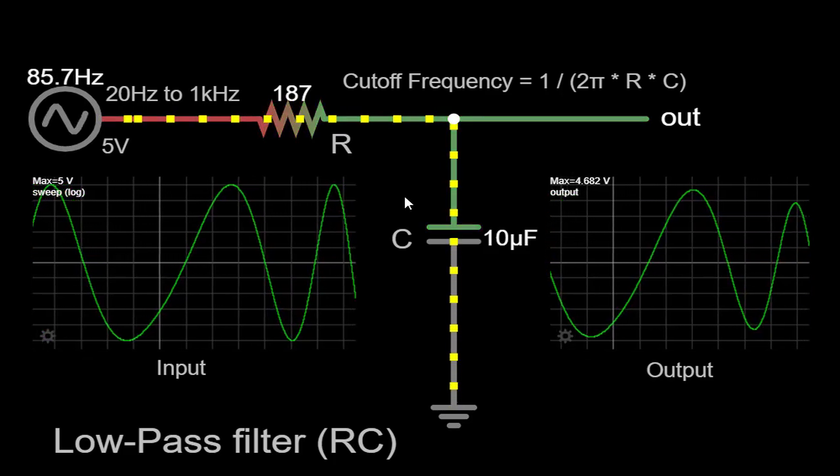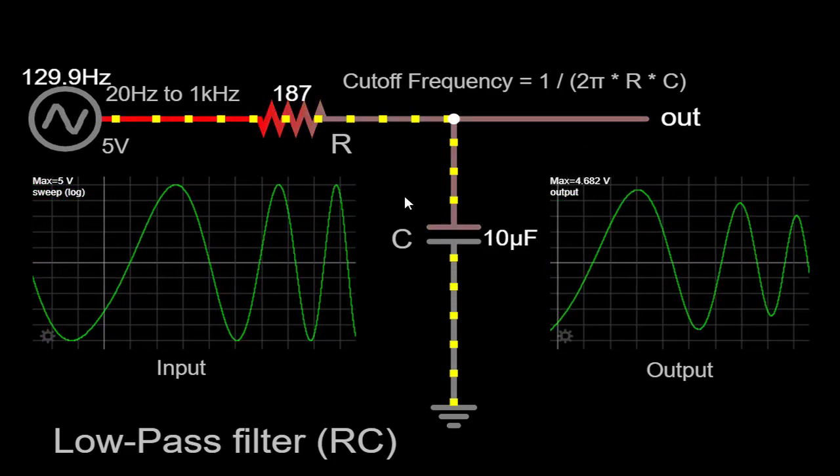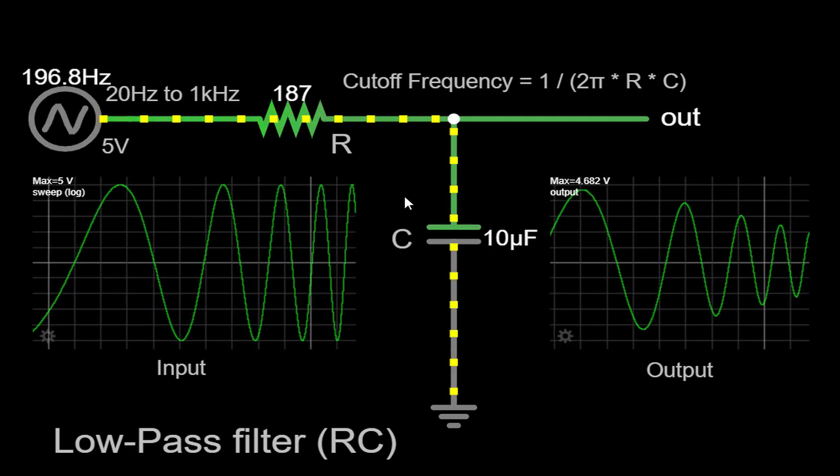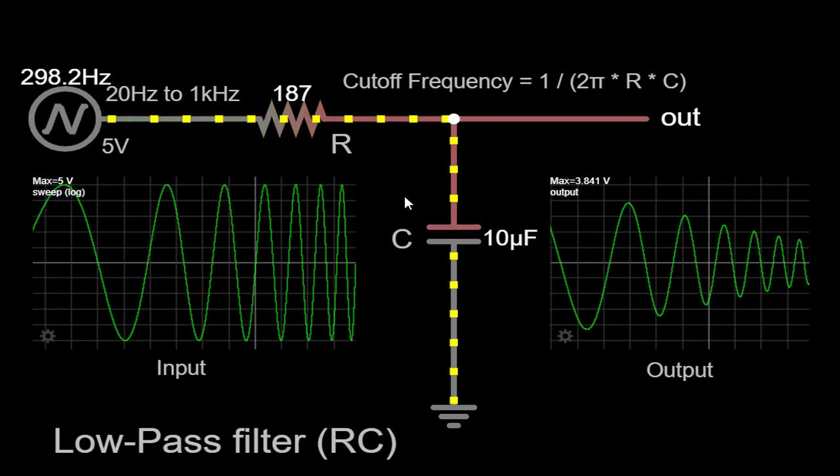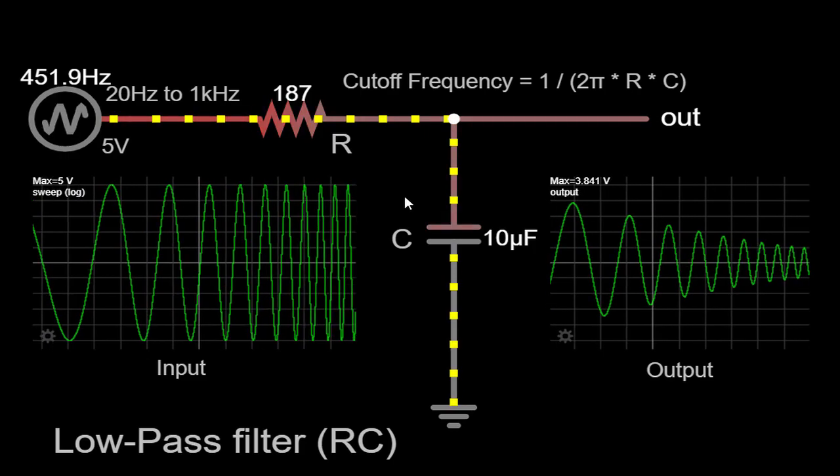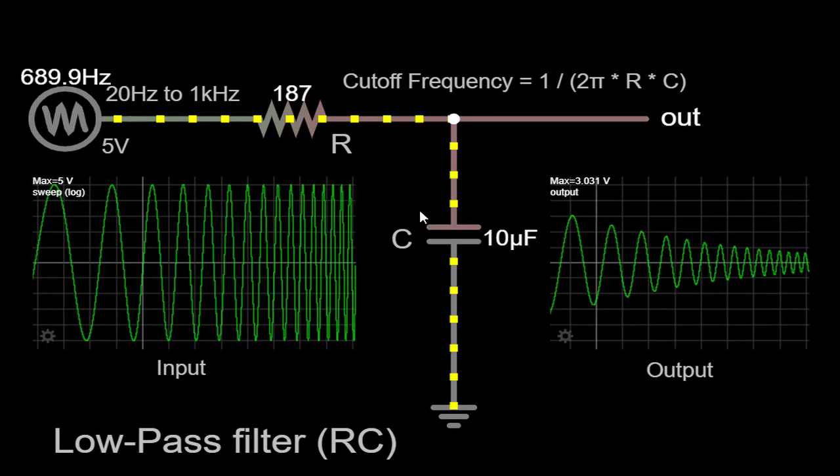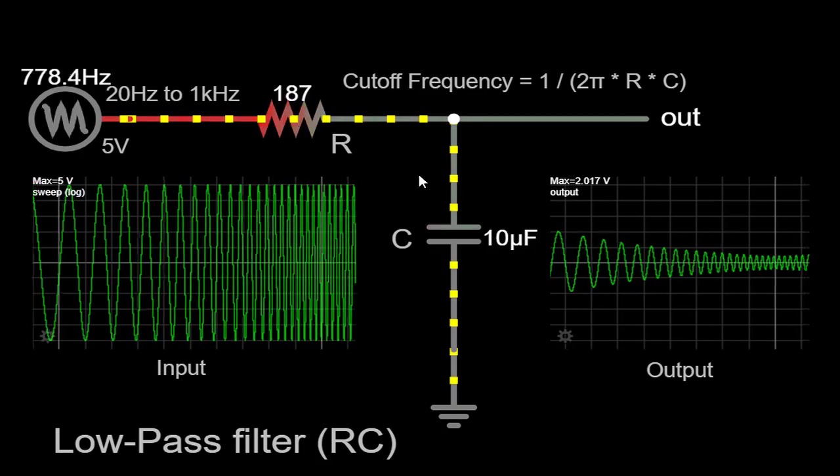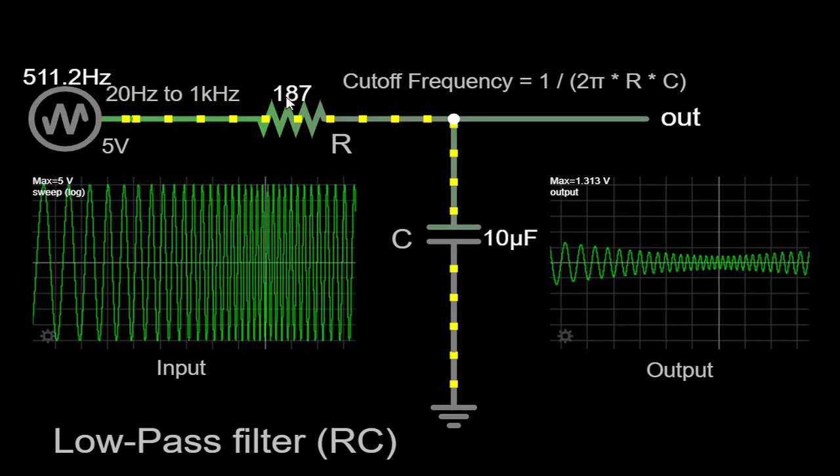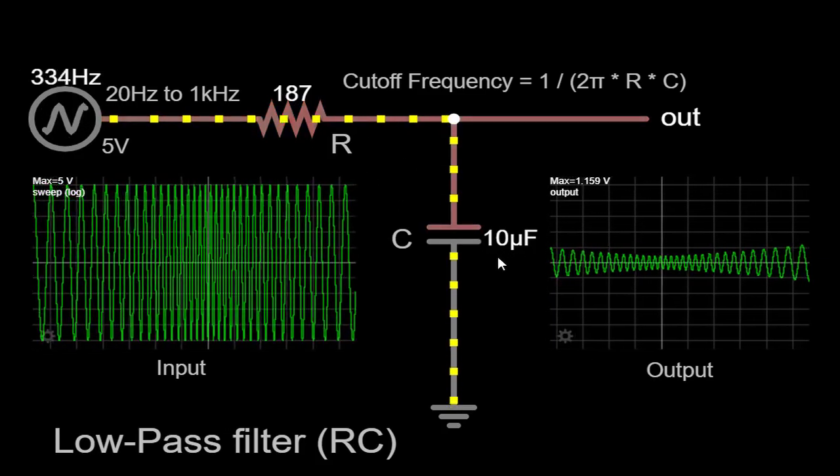It is important to note that the point at which the attenuation becomes significant and the transition between the past and attenuated frequencies occur is determined by the values of the resistor and capacitor in the circuit. In this specific case, with a 187 ohm resistor and a 10 microfarads capacitor, the cutoff frequency can be calculated using the formula.